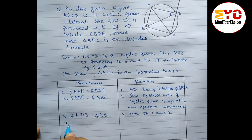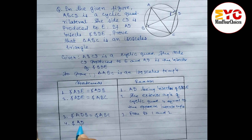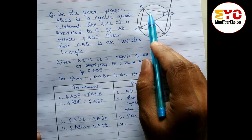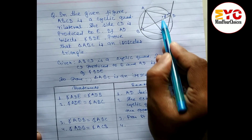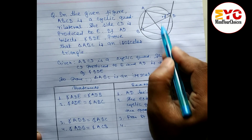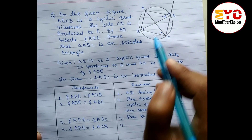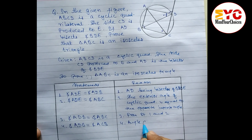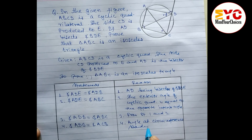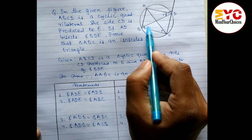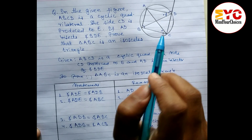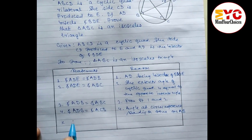Statement 4: angle ADB equals angle ACB. Look at the diagram — angle ADB and angle ACB are both equal. Reason: angles at the circumference standing on the same arc AB are equal (inscribed angle theorem).